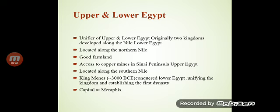Upper and Lower Egypt: originally two kingdoms developed along the Nile. Lower Egypt was located along the northern Nile with good farmland and access to copper mines in the Sinai Peninsula. Upper Egypt was located along the southern Nile. King Narmer conquered Lower Egypt, unified the kingdom, and established the first dynasty with its capital at Memphis.